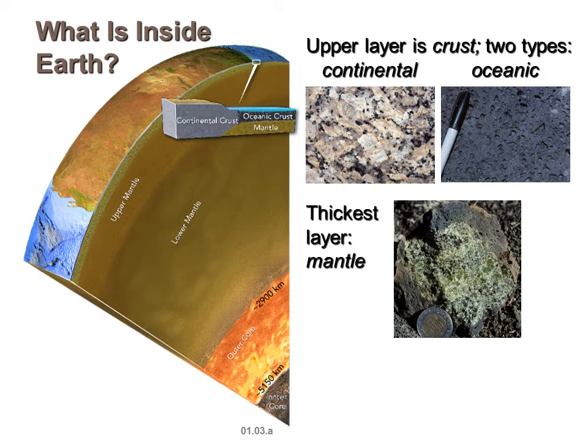The thickest layer is the mantle — that's the layer with the upper mantle and lower mantle, extending quite a ways until you hit the core. Label the crust, mantle, outer core, and inner core in your notes. We have the crust on the outside, the mantle is the thickest layer in the middle, and then the outer core — which looks orange and red like magma in diagrams — and then the solid inner core.